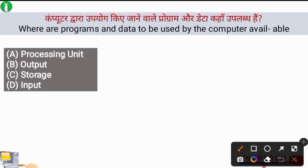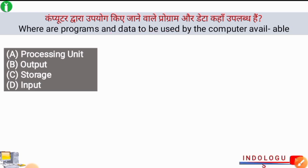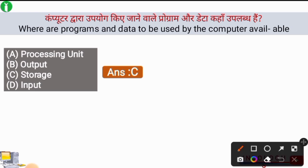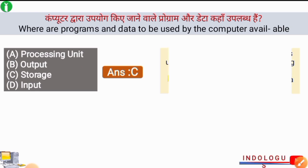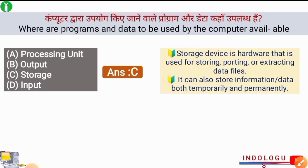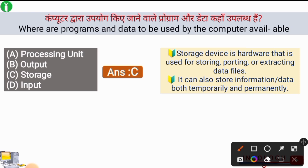Next question: Where are the programs and data to be used by the computer available? The right answer is option C, storage. Storage means the programs and data which are available for the computer to be used are stored there. A storage device is hardware used for storing, porting, or extracting data files. It can store information both temporarily or permanently.